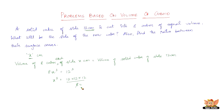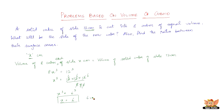Simplifying, x cubed equals 6 × 6 × 6, which is 6 cubed. So if x cubed is 6 cubed, then x equals 6. Therefore the side of the new cube is 6 cm.